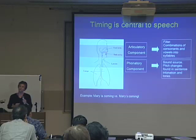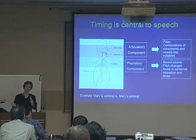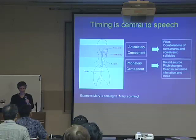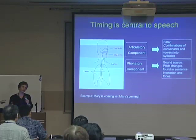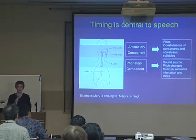For example, you might say 'Mary's coming' or 'Mary's coming?' We have the same sounds produced in a similar manner in the oral cavity, but we are changing the pitch. We are changing the information that comes from the phonatory component. When we see this whole system, we see that timing is central — the coordination of all the activities of the larynx, the jaw, the tongue, and all the muscles are essential to produce intelligible speech. When timing is not right, the speech is not intelligible.